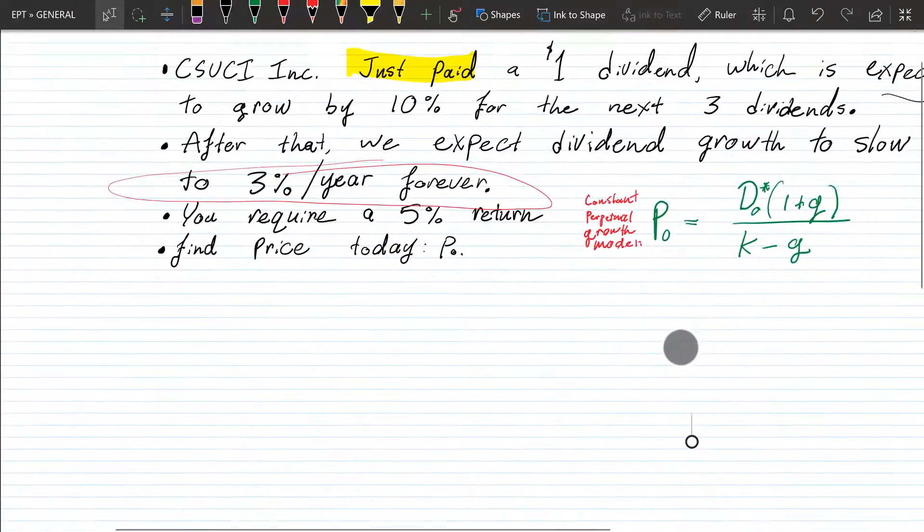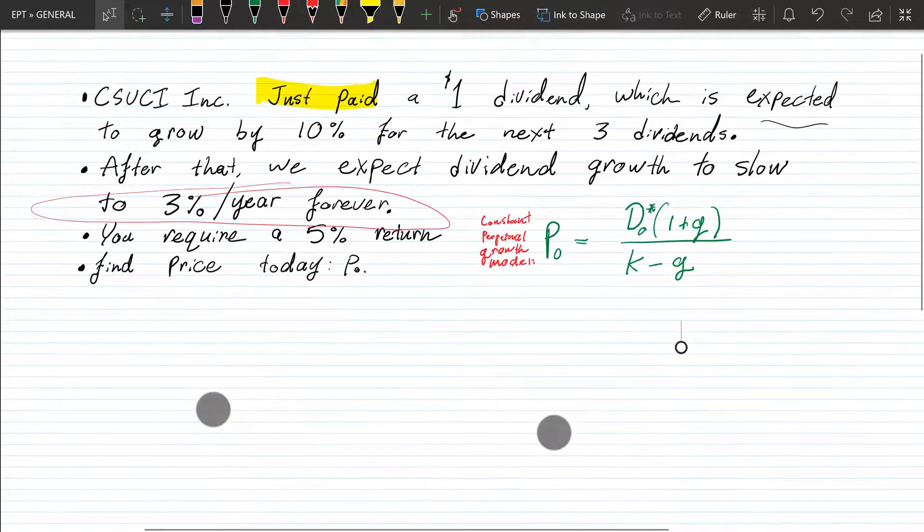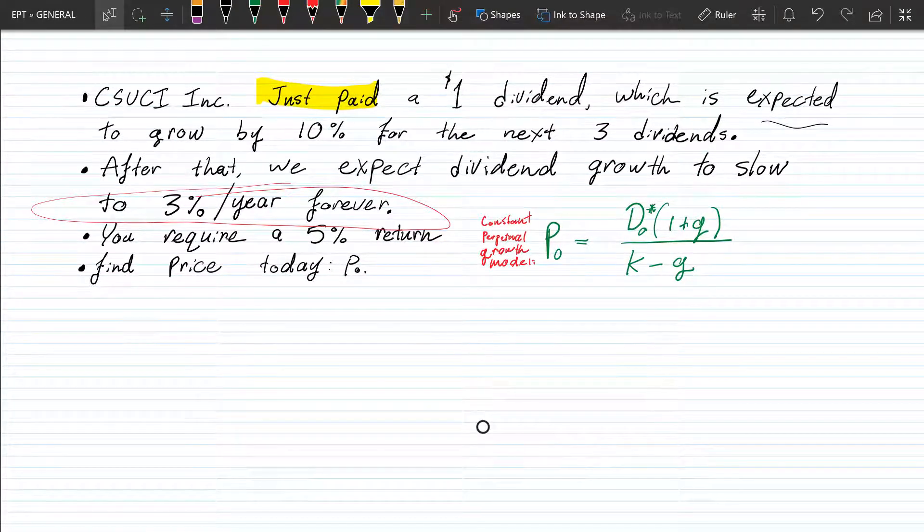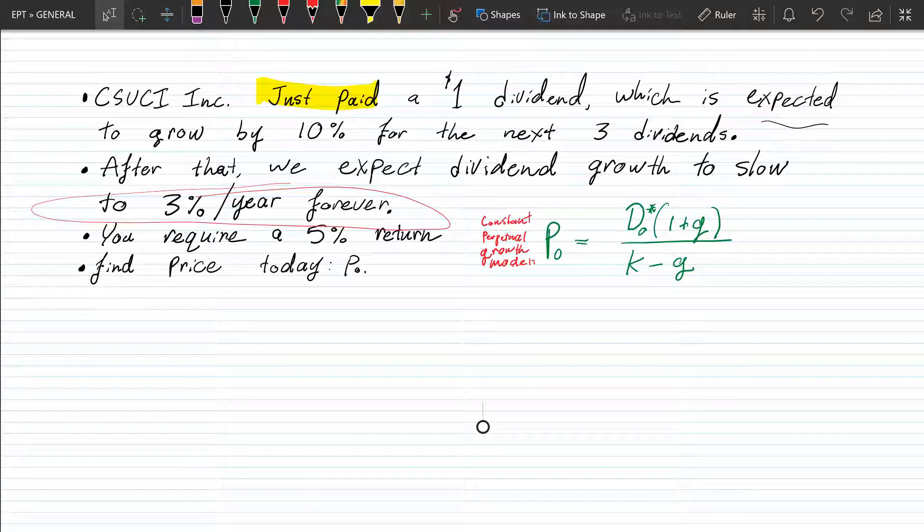These problems seem very complex, but I'm going to try to break it down for you real quick. Okay, CSUCI Inc. just paid a $1 dividend, which is expected to grow by 10% for the next three dividends. After that, we expect the dividend growth to slow to 3% per year forever. You require a 5% return. Find the price today.